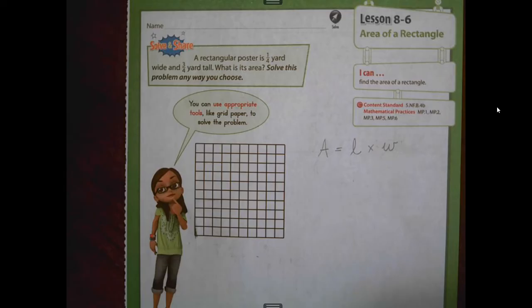Now, more realistically, is that your side lengths are going to be fractional instead of whole numbers. So we need to know how do we find the area of rectangles and squares that have these fractional side lengths. So we're going to start with the solve and share today.